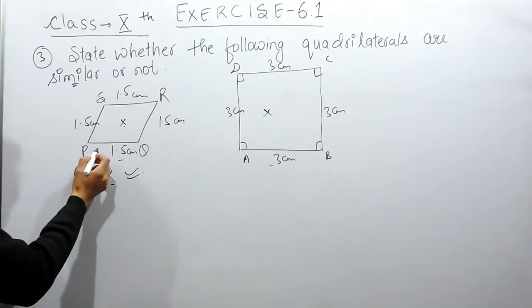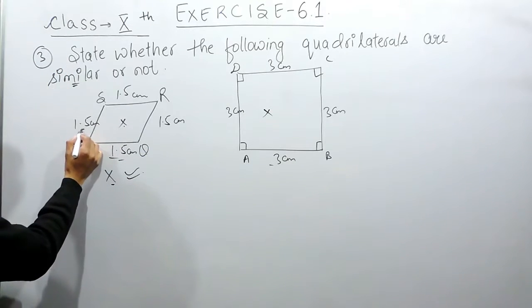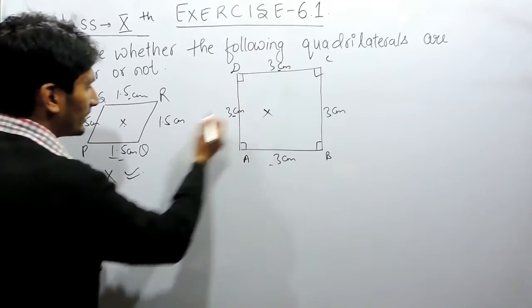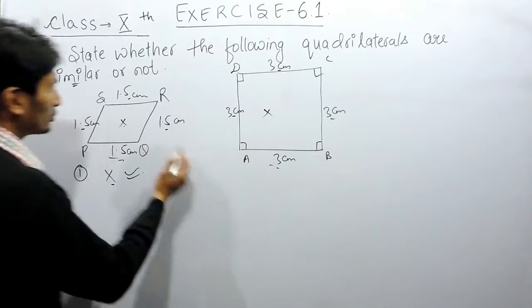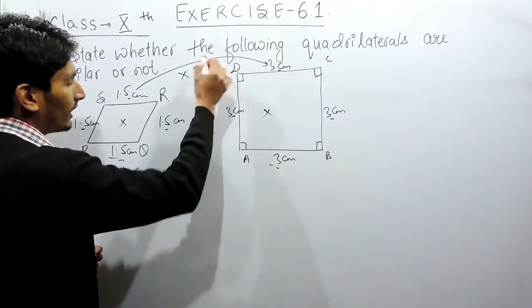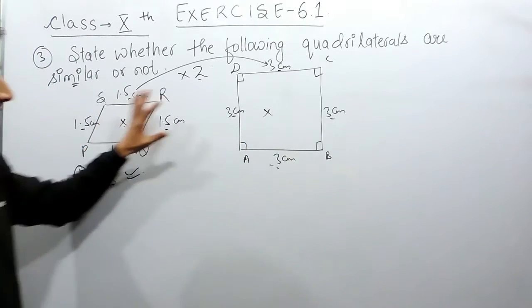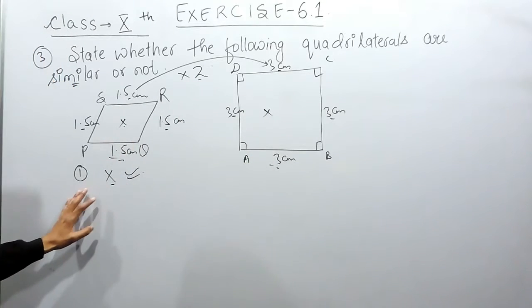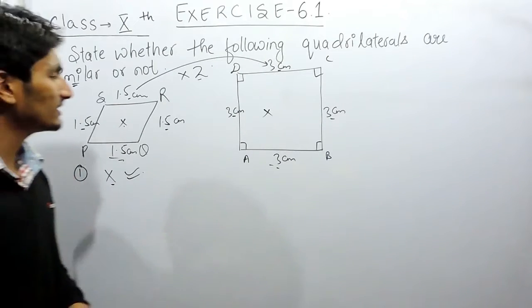However, their sides are in proportion. The sides of the first quadrilateral are 1.5 and the sides of the second are 3, so the ratio is 1.5:3 for all corresponding sides — the sides are doubled. But since the angles are not the same, these two figures are not similar.